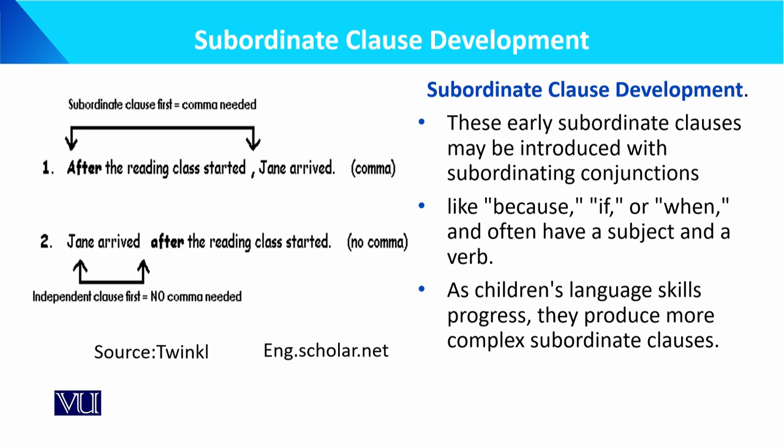As children's language skills progress, they produce more complex subordinate classes. For example: 'After reading class started, Ali arrived.' Here the subordinate clause has a comma. Another example: 'Jane arrived after reading class started.' — no comma here.